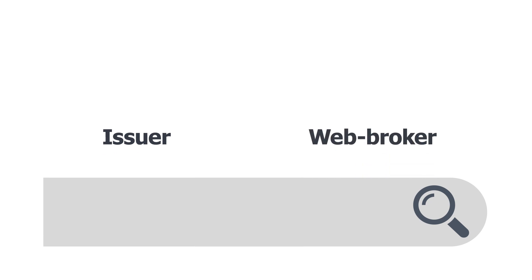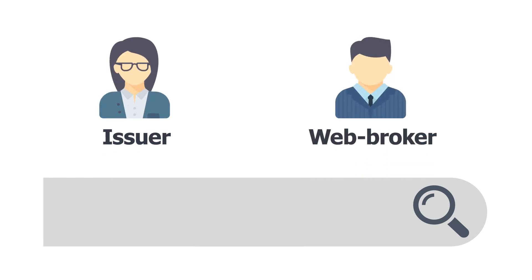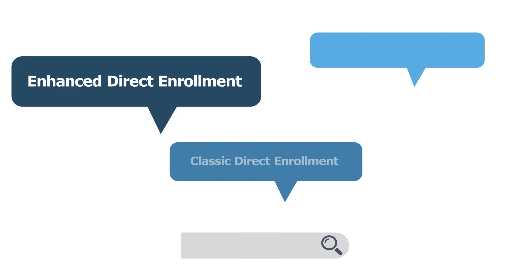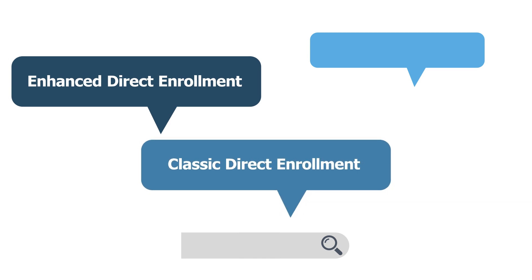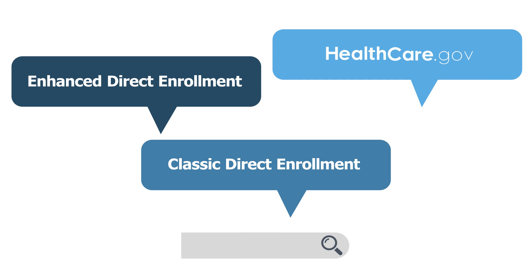The Issuer and Direct Enrollment Partner Directory is a searchable database that agents and brokers can use to find issuers or web brokers interested in working with them. The organizations on this resource offer a variety of enrollment and client management capabilities, such as Enhanced Direct Enrollment, Classic Direct Enrollment, or, for issuers, enrollment through Healthcare.gov only.